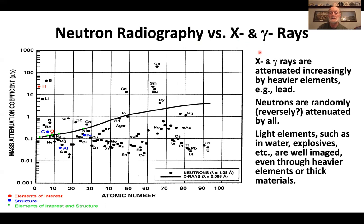I'll now talk about the unique application of the reactor: neutron radiography. It is similar to X-ray and gamma ray imaging, except in its behavior. Looking at a plot of attenuation versus atomic number, X-rays attenuate more with higher atomic number — lead is a good X-ray attenuator. For neutrons, there is no smooth curve; they're all over the place, and the attenuation pattern is essentially reversed, with light elements such as hydrogen in water or explosives being strong neutron attenuators.